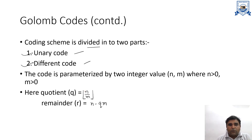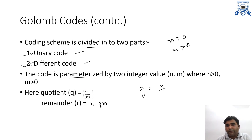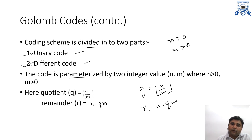The code is parameterized by two values, n and m, where the value of m should be greater than 0 and the value of n is also always greater than 0. We have to calculate the quotient and remainder. The value of quotient is the floor function of n divided by m, and the remainder is calculated as n minus q times m.